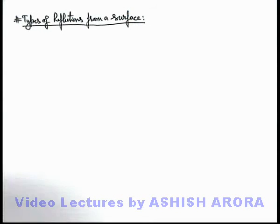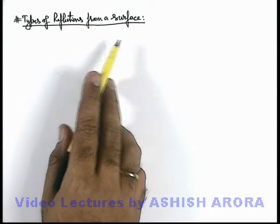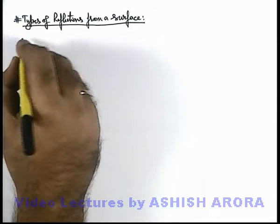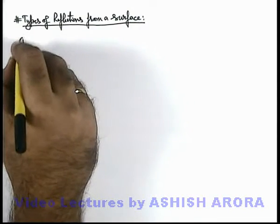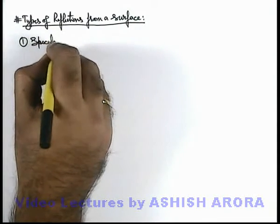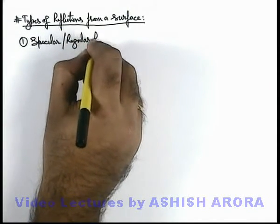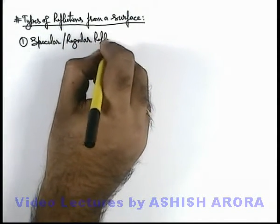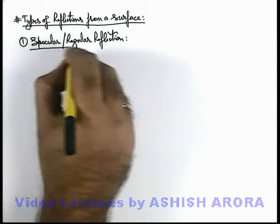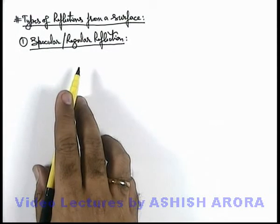Let's now discuss the types of reflection from a surface. In general, when a light beam is incident on a surface, reflection is categorized in 2 ways. The very first is specular or regular reflection. This type of reflection takes place whenever the reflection occurs from a smooth surface.